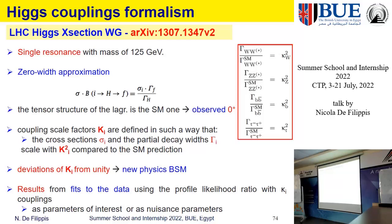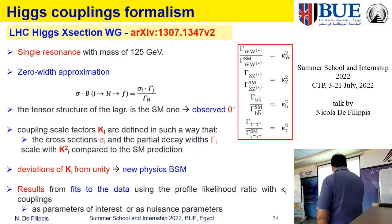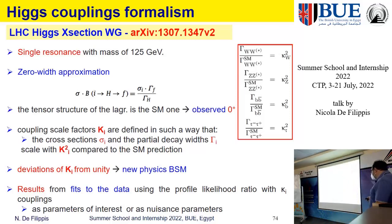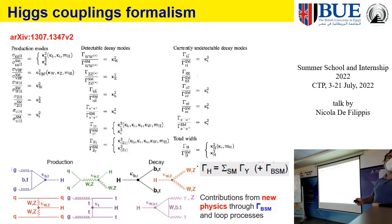If you have deviations from unity, you start to claim new physics. So a way of looking for new physics is to look for deviations of this Kappa factor from one. The LHC collaborations are making measurements of this Kappa factor as indirect measurements of the coupling of the Higgs to other particles.